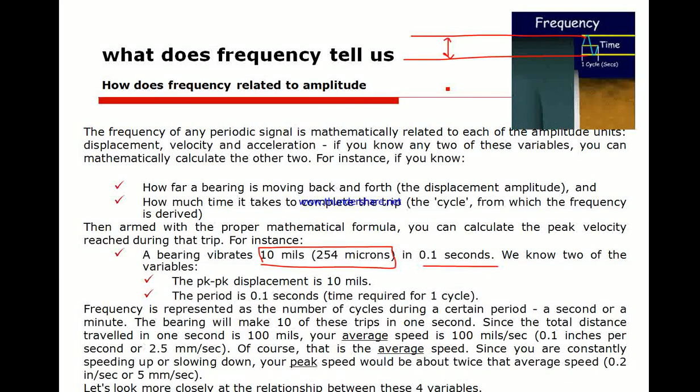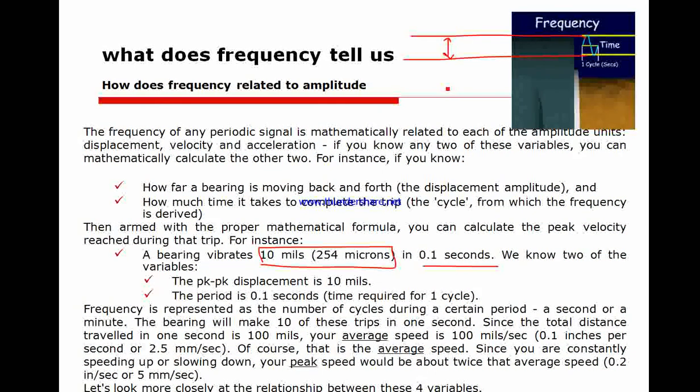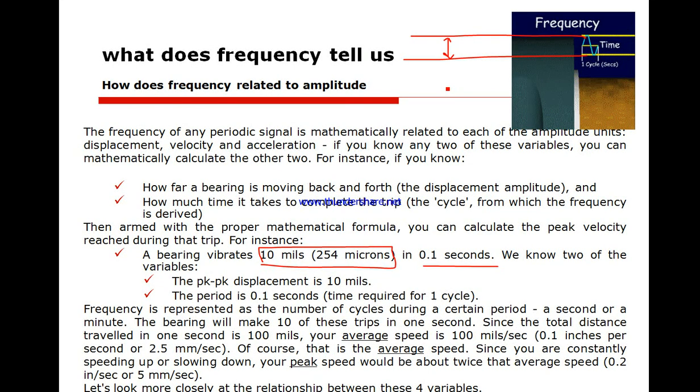If we want to know how many in one second, it's 10 cycles. Each second it's 10 mils displaced or has traveled 10 mils. So in 10 cycles it's 100 mils, which is 2540 microns.